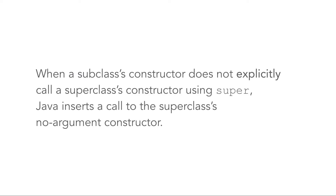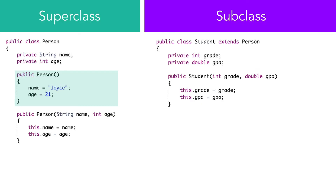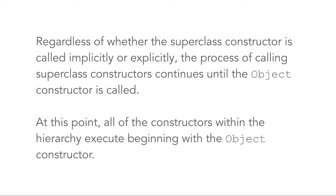When a subclass's constructor does not explicitly call a superclass's constructor using the keyword super, Java inserts a call to the superclass's no-argument constructor, also known as the default constructor. Notice that in this example, the Student subclass doesn't make a call to the superclass constructor. Without this call, Java automatically uses the no-argument constructor in the Person class, if there is one. Regardless of whether the superclass constructor is called implicitly or explicitly, the process of calling superclass constructors continues until the Object constructor is called. At this point, all of the constructors within the hierarchy execute beginning with the Object constructor.